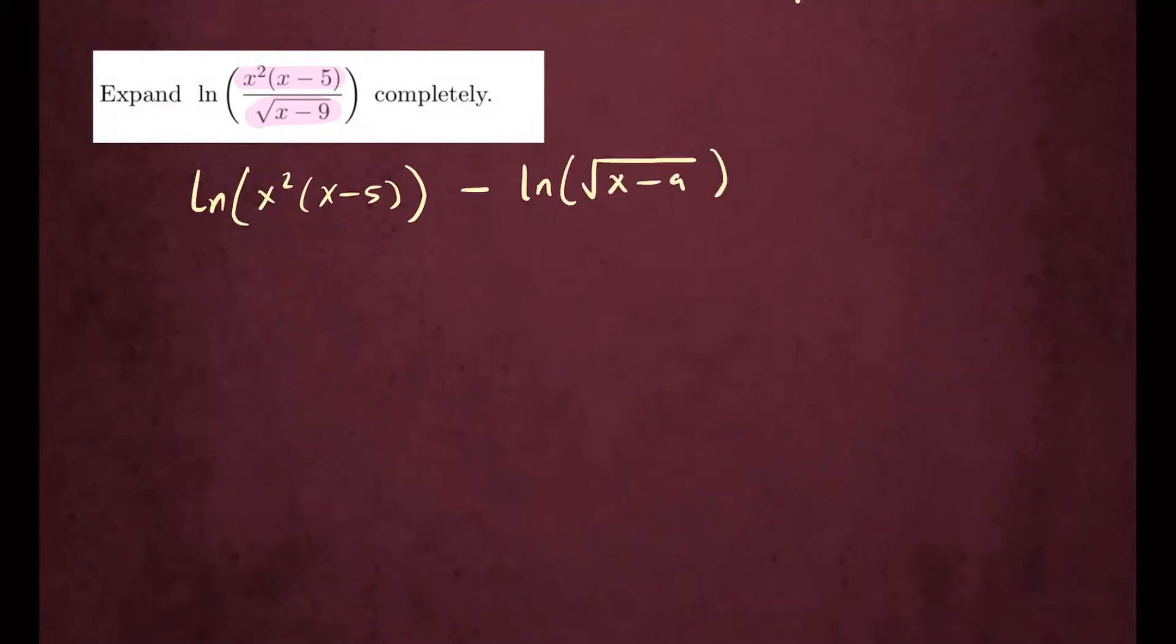And now here, I notice there is a term times another term, so I can separate them into two sums of logarithms. This will be ln of x squared plus ln of x minus five, and keep rewriting the second one.